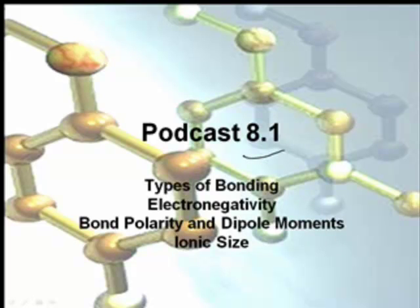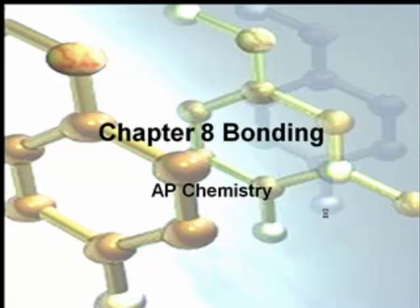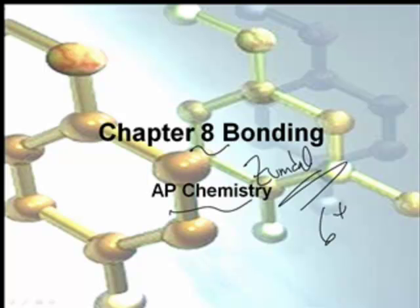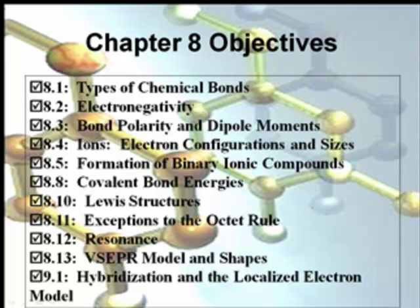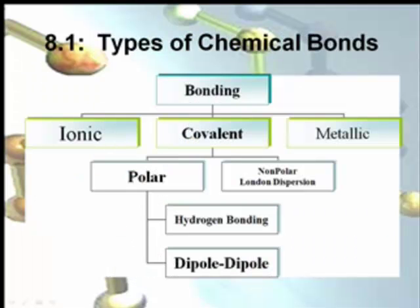Well, I guess we are talking about chemical bonds. We are. I guess we should probably start talking about chemical bonds. Seriously folks, we really are going to be talking about chemical bonds. And Mr. Samms, as crazy as he is, we have no idea where his brain is today. Podcast 8.1, types of bonding, electronegativity, bond polarity, dipole moments, ionic size. We're going to talk about all these things. This is the beginning of Chapter 8 in AP Chemistry using the Zumdahl text, by the way, the 6th edition.